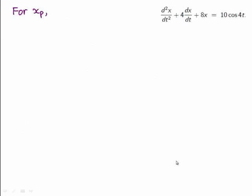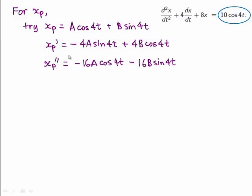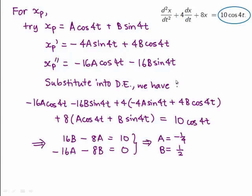Next, we want to find a particular solution. In this case, we look at the right-hand side which is 10 cos 4t. And for a particular solution, we try xp equals to A cos 4t plus B sin 4t. We can then find the first and second derivatives of xp with respect to t. And then substitute these derivatives into the equation to find A and B. Doing so, we have this expression here.